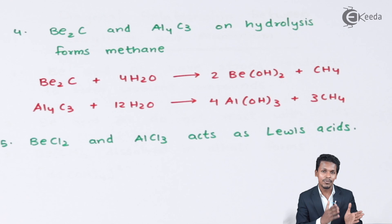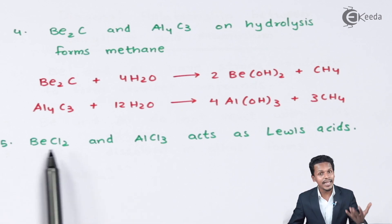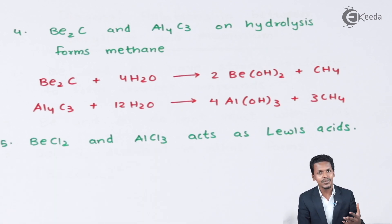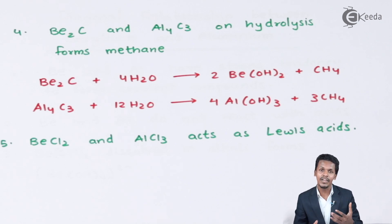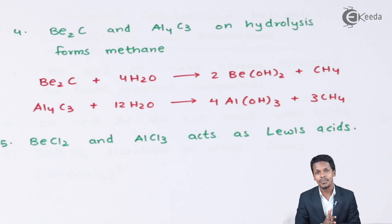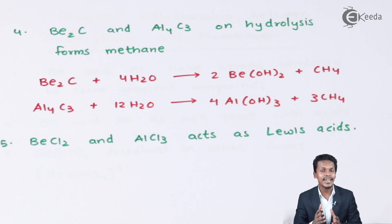The fifth point: beryllium chloride (BeCl₂) and aluminium chloride (AlCl₃) both act as Lewis acids and can readily react with bases. AlCl₃ in particular plays a very important role in the Friedel–Crafts reaction, acting as a catalyst for Friedel–Crafts alkylation and acylation. These are key chemical similarities between BeCl₂ and AlCl₃.